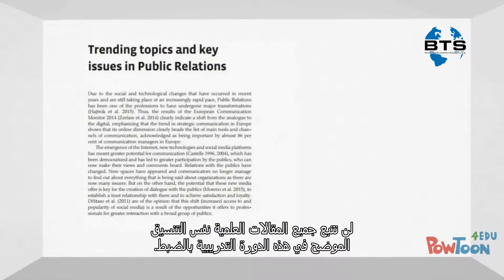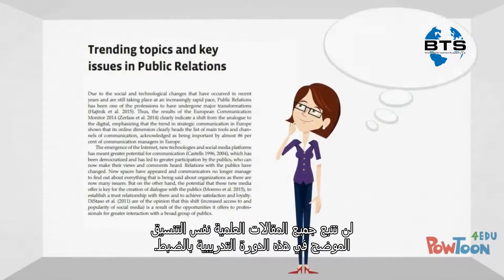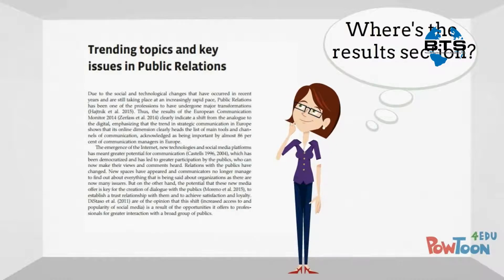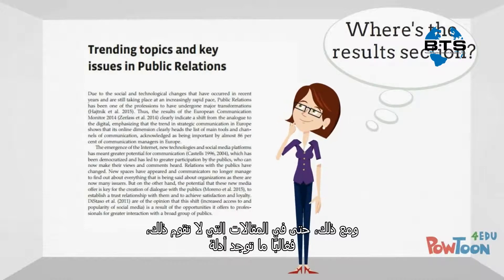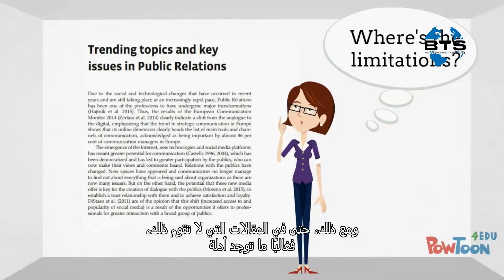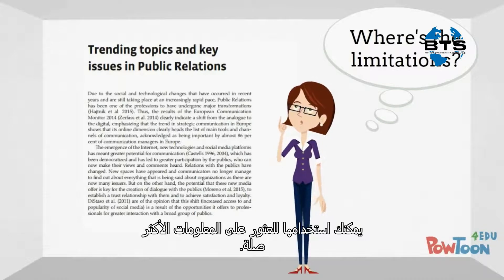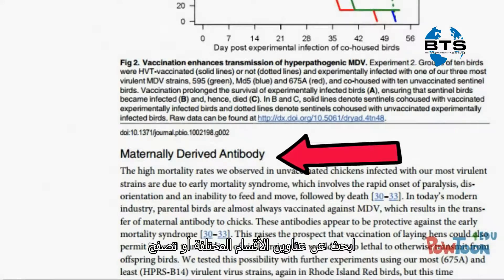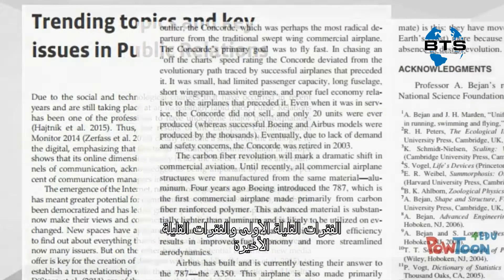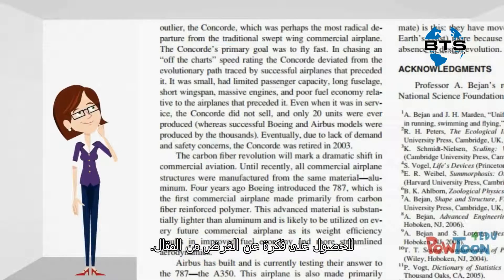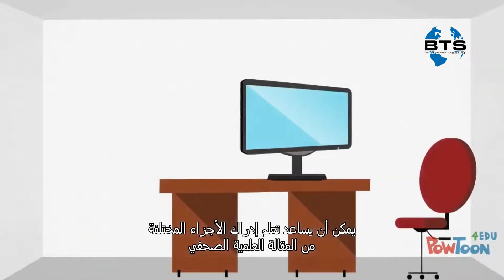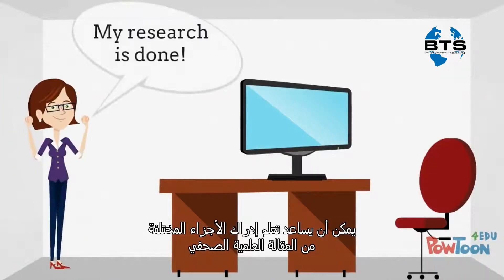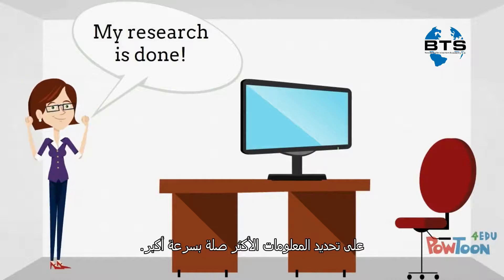Not all scholarly articles will follow the exact same format described in this tutorial. However, even in articles that do not, there are often clues that you can use to find the most relevant information. Look for the headings of the different sections, or skim the first few paragraphs and the last few paragraphs to get an idea of the purpose of the article. Learning to recognize the different parts of a scholarly article can help journalists to identify the most relevant information more quickly.